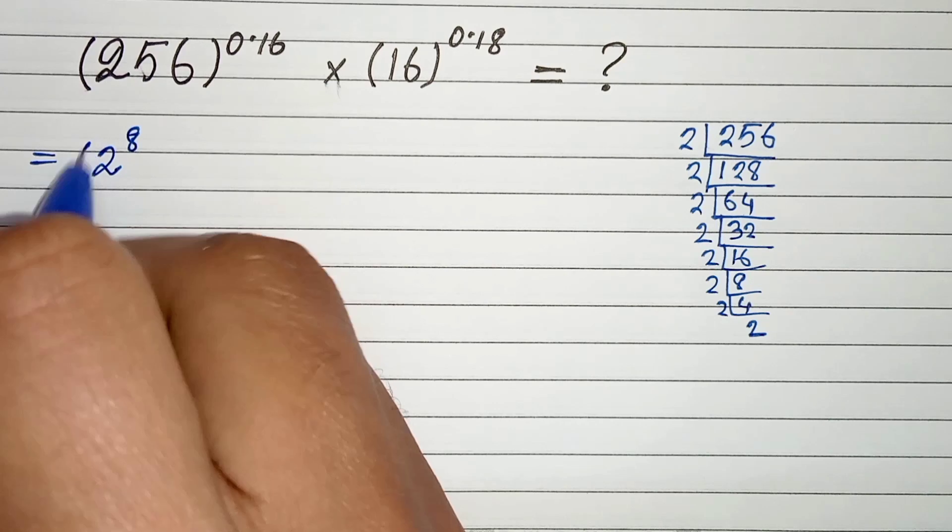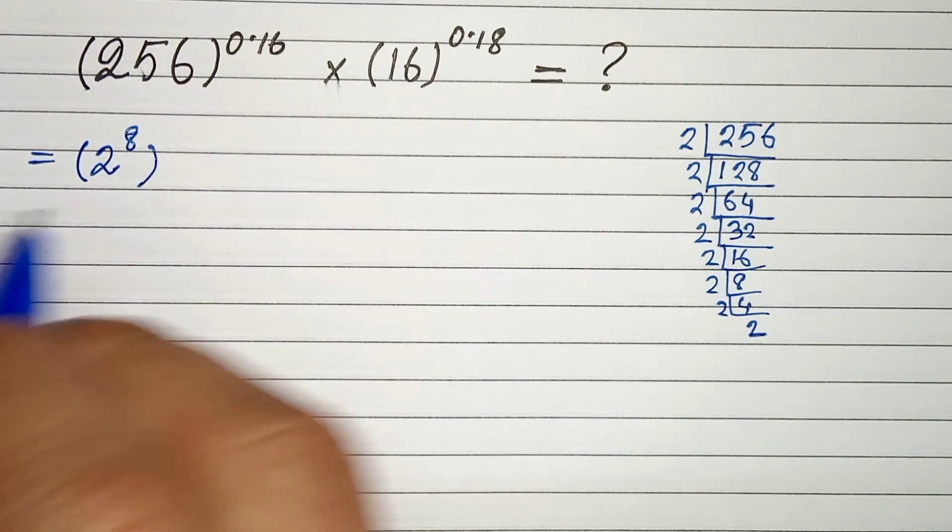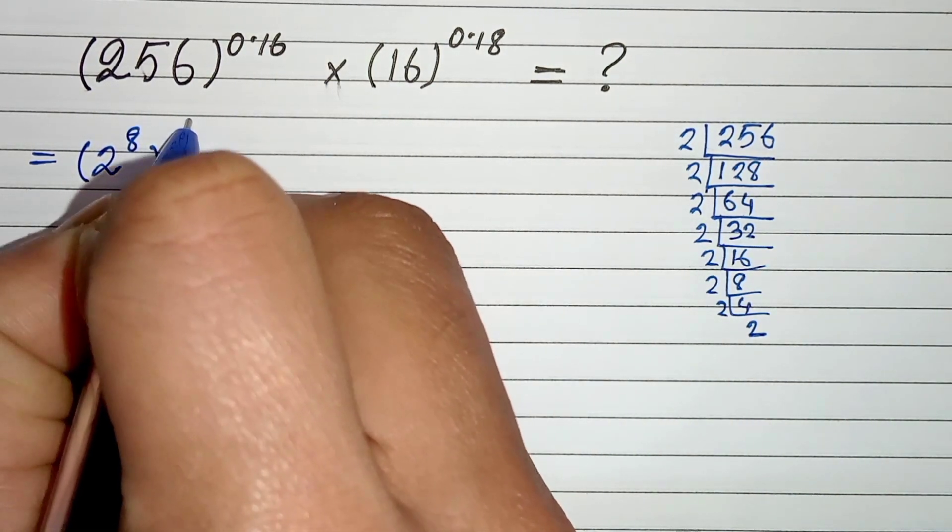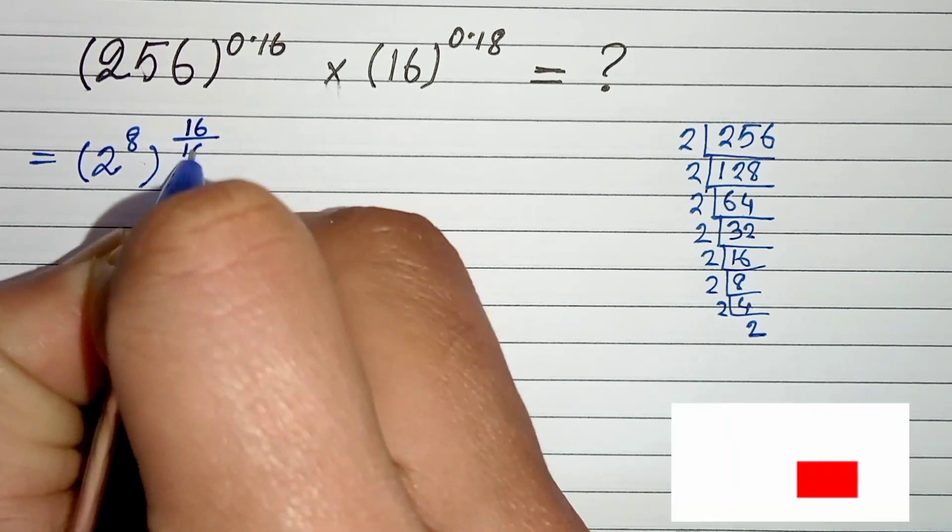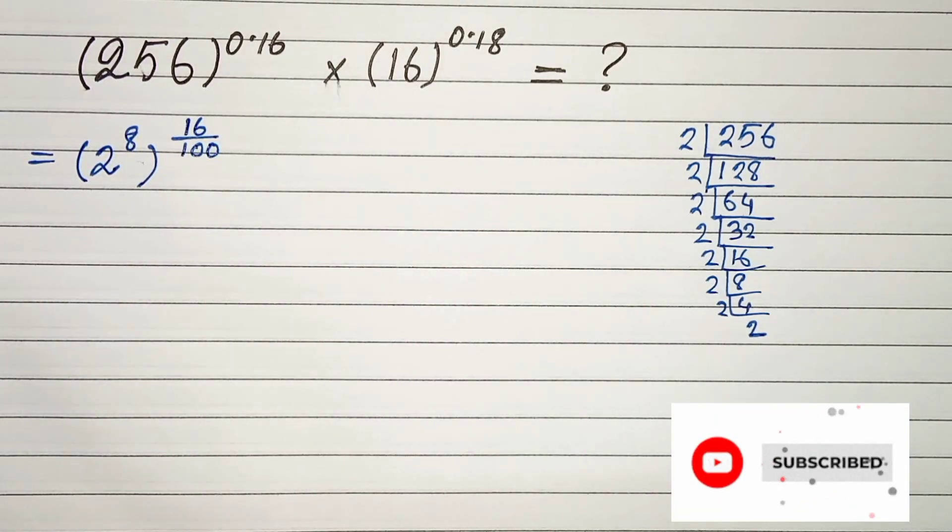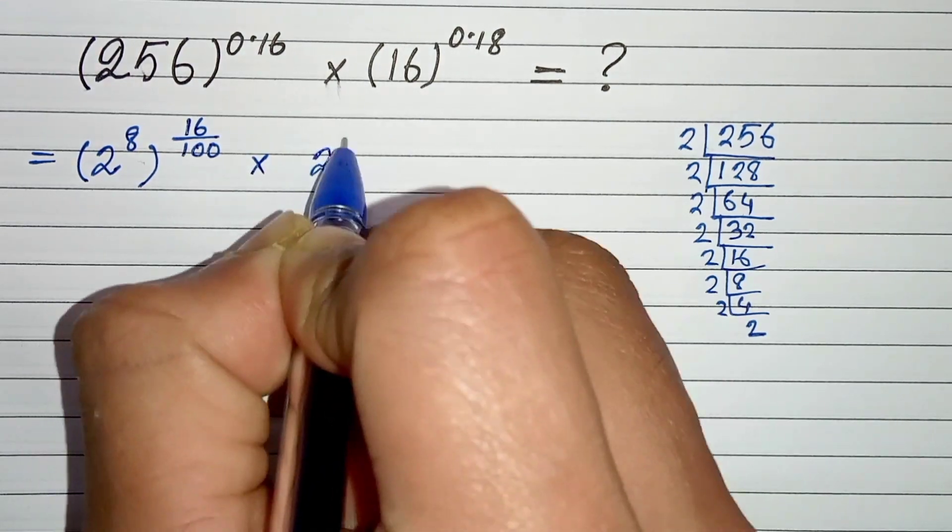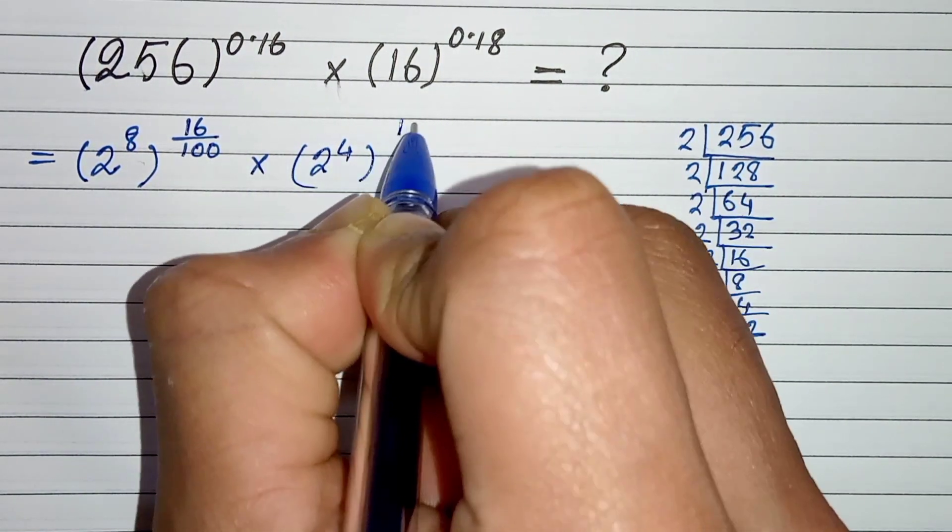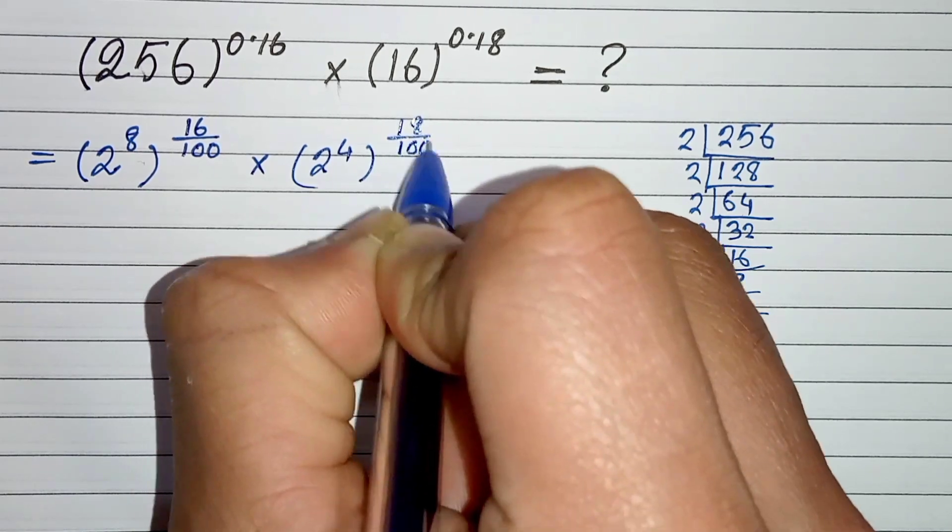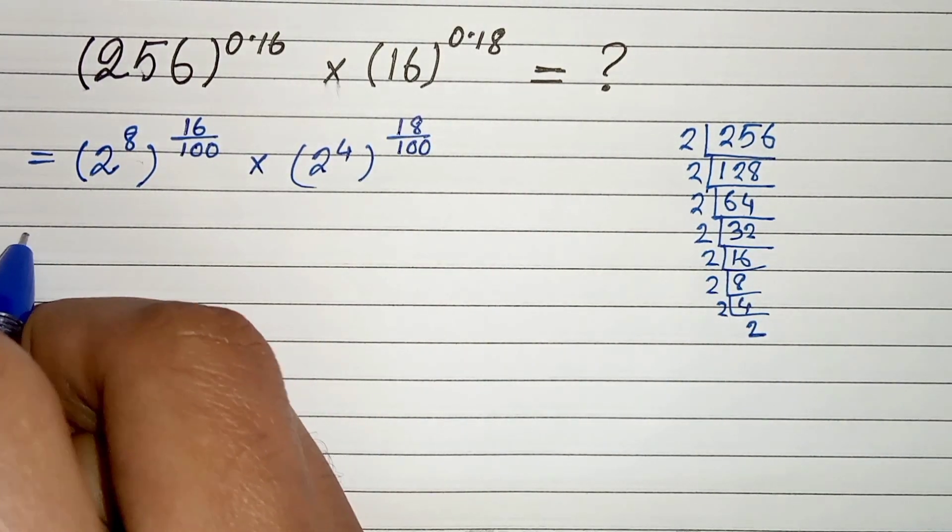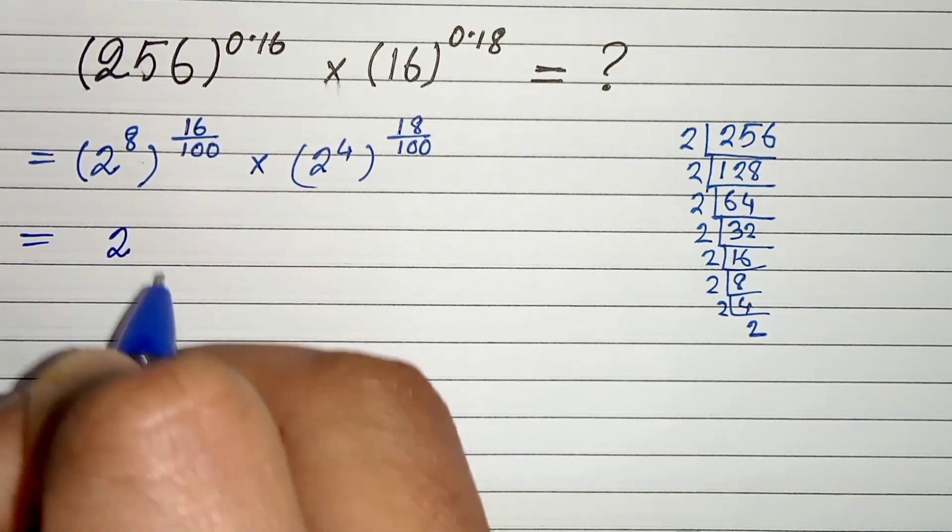And 0.16 can be written as 16 divided by 100. Times 16 can be written as 2 to the power 4, and 0.18 is 18 by 100.